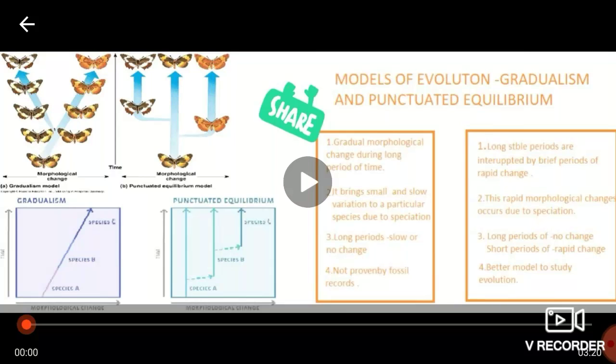So in case of gradualism model, there is a gradual morphological change during the long course of time and it brings small and slow variation to a particular species because of speciation. For long periods, there is only slow or sometimes no change occurs and in this case the fossil records not proven till now.